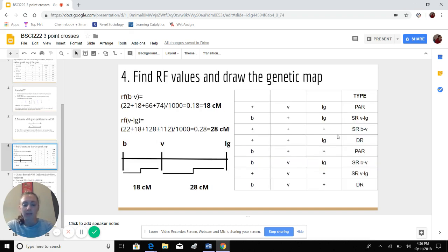So now that we have this, I filled in the rest of the table for you. I hope that you were able to figure it out as well. And now we can find the RF values and draw the genetic map. So the RF values tell you how far apart the genes are from each other.